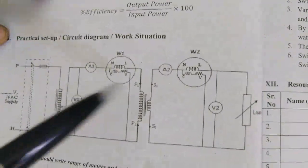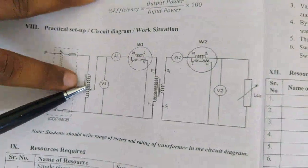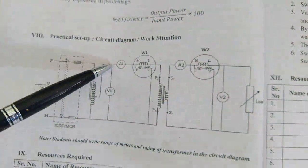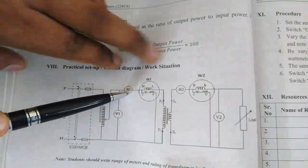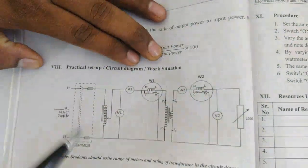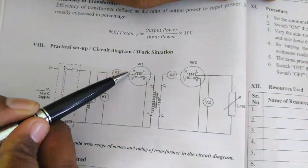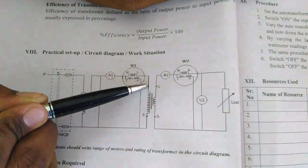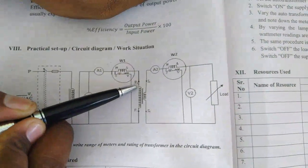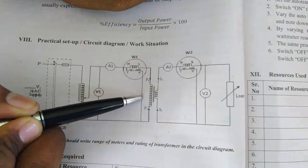This is the actual circuit diagram. This is the input supply connected to a single phase variac. One point of the single phase variac is connected to the primary of the transformer through an ammeter and wattmeter. The ammeter's second point is connected to the wattmeter M point. The wattmeter M and C points are short circuited, and the L point is connected to the transformer primary, which has a larger number of turns. This is a step-down transformer.